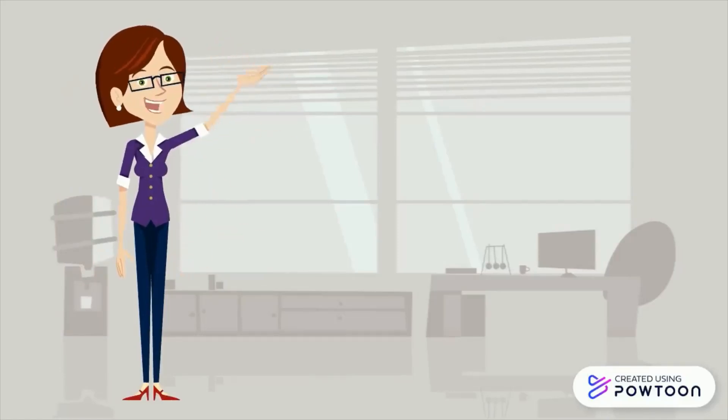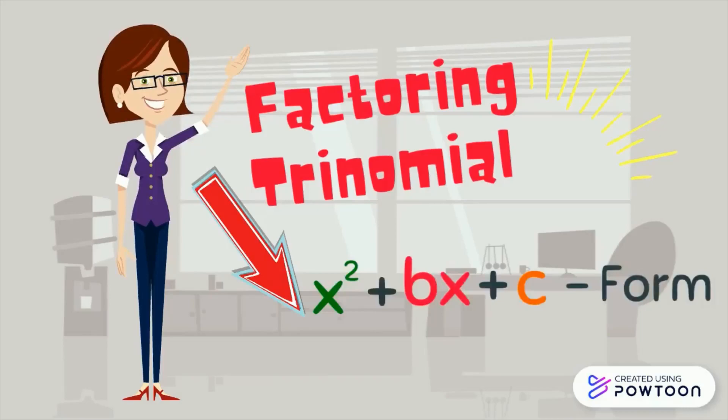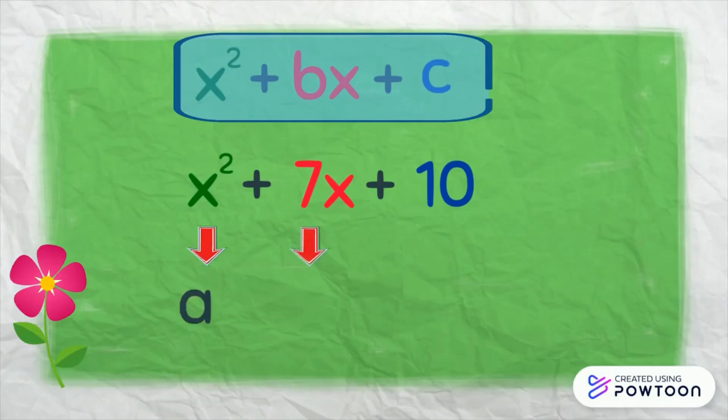Today, it is about factoring trinomial in x² plus bx plus c form. Here is an example of a trinomial in x² plus bx plus c form: x² plus 7x plus 10. The numerical coefficient of x² is a, of x is b, and the constant or fixed number is c.